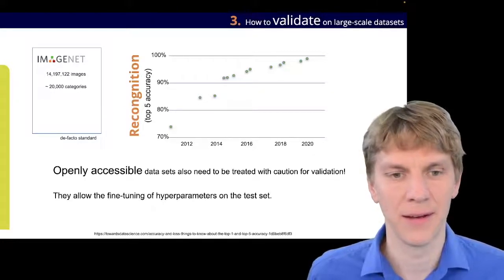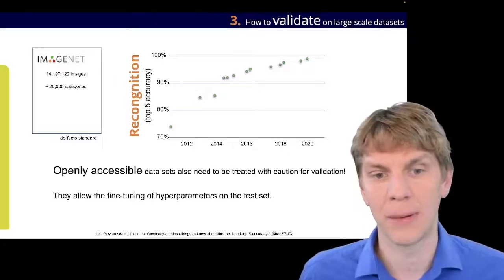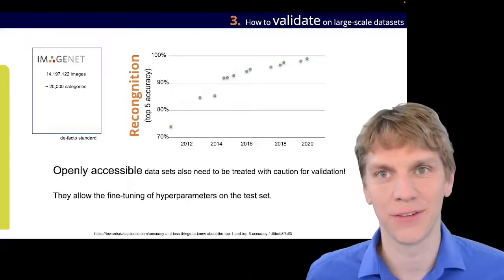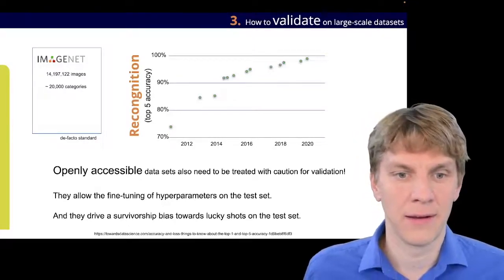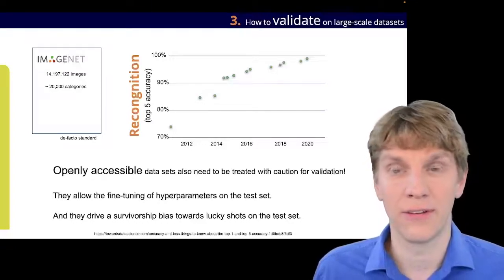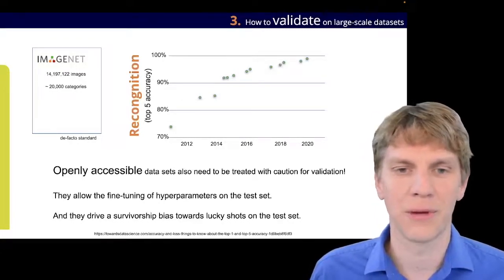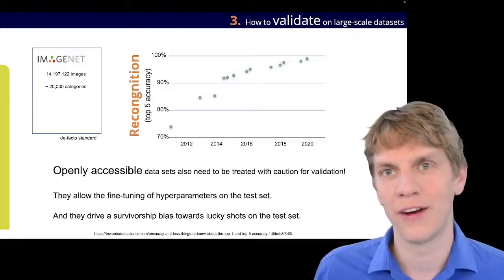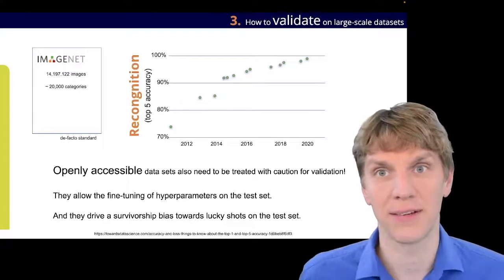So, this is a thing that means openly accessible datasets really need to be treated with caution for when they should be used for validation. Okay, because if they are available, then they allow the fine-tuning of hyperparameters on the test set, and this is, of course, not a good thing in terms of being representative. Also, they drive a survivorship bias towards, actually, lucky shots on the test set, right? So, we will never know which of those are real algorithmic advancements and which of those are just some kind of lucky shots which can also then happen, even though we are on a really big dataset.